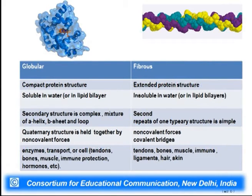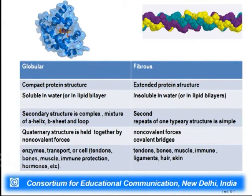In globular proteins you have a compact structure very much soluble in water or even in lipid bilayers, while fibrous proteins are extended protein structures which are insoluble in lipids and water. The globular protein quaternary structure is held together by non-covalent forces, while fibrous proteins involve covalent bonds between different chains that give rise to stability and insolubility.